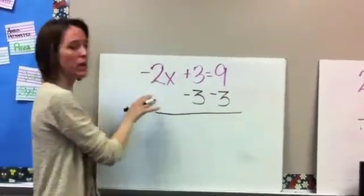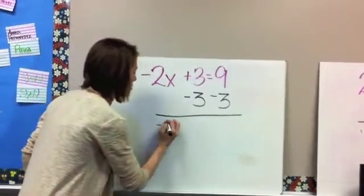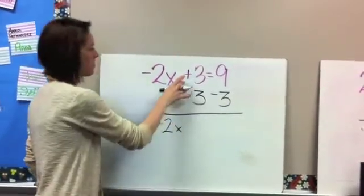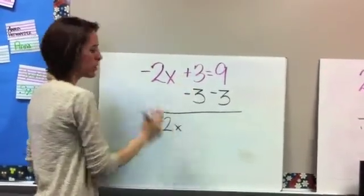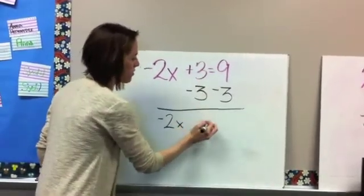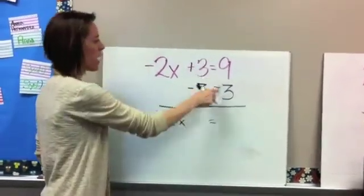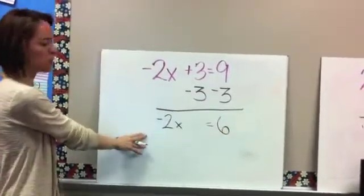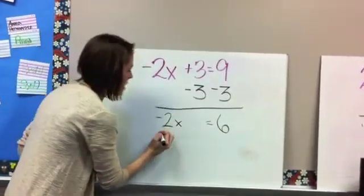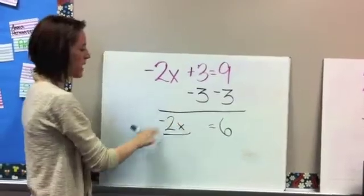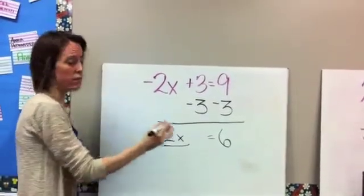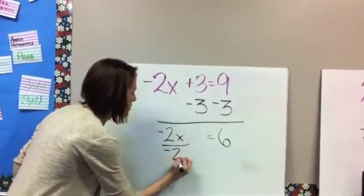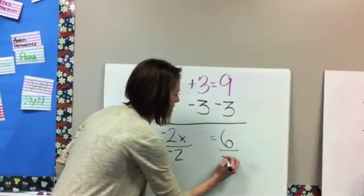Okay, our negative 2x can't combine with anything, so we just bring that down. Plus 3 minus 3 gives us 0. Bring down our equal sign. Then we have 9 minus 3, which is 6. Now we've gone from a 2-step to a 1-step. This is multiplication, negative 2 times x. Inverse operation is division, so you divide by negative 2. Divide this side by negative 2.